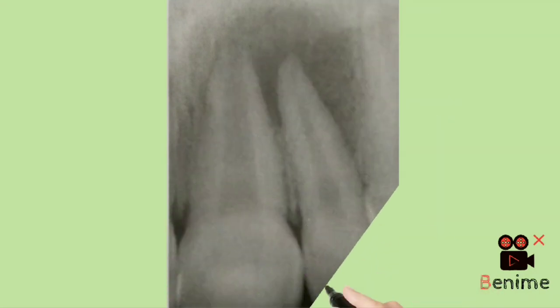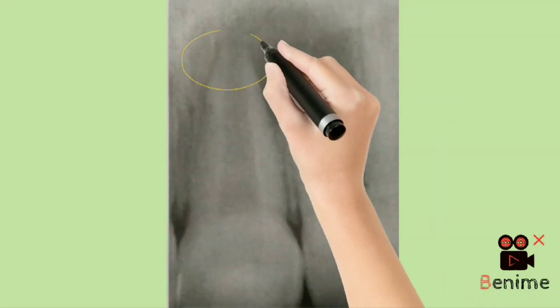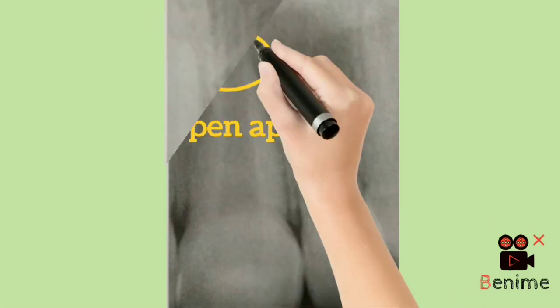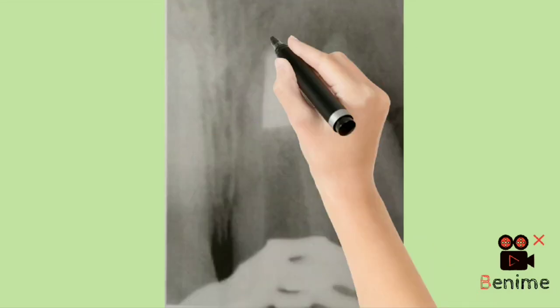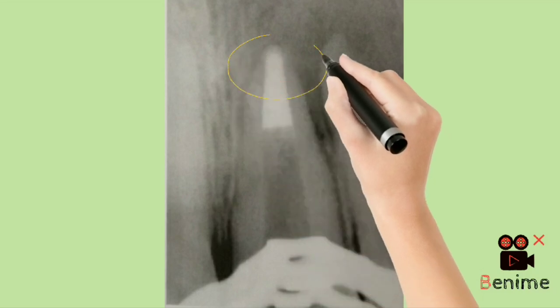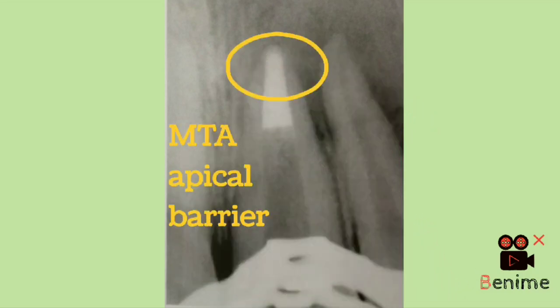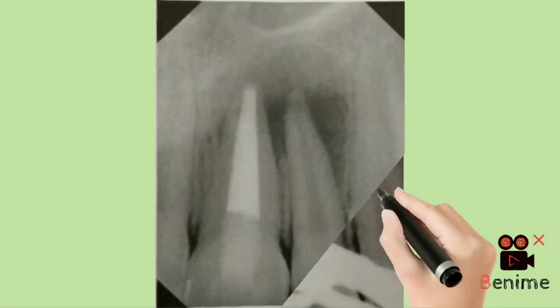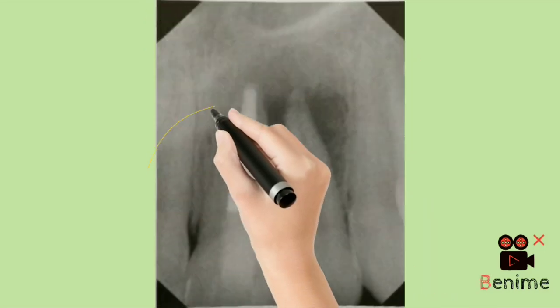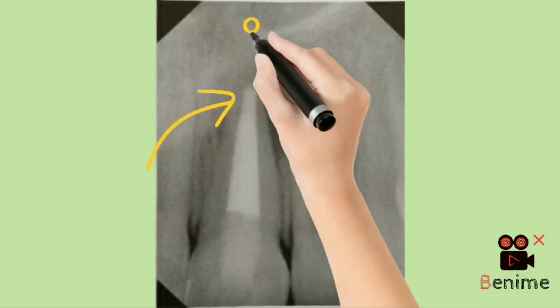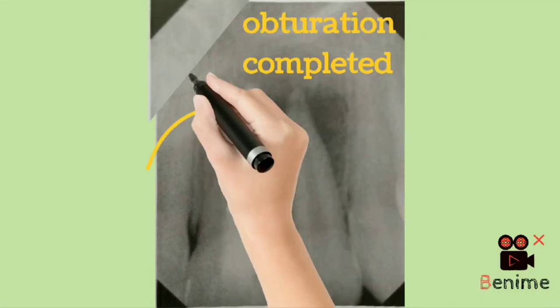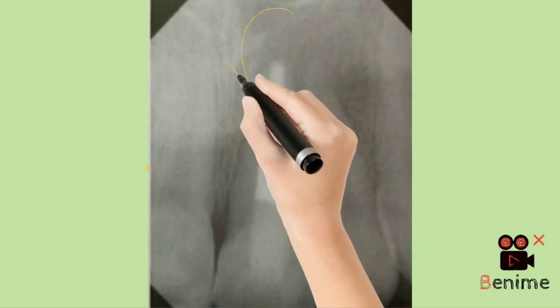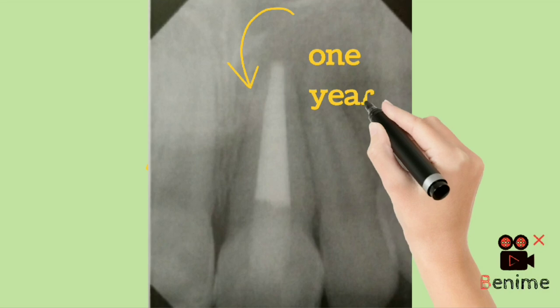Now a case presentation with MTA. You can see an open apex tooth with periapical lesion. Then after cleaning and shaping, 2 to 3mm of apical plug of MTA is created. After that, when patient is called after 48 hours, apical closure is checked and obturation is done using thermoplasticized obturation. This is a radiograph of 1 year follow-up showing the tooth being clinically and radiographically asymptomatic.